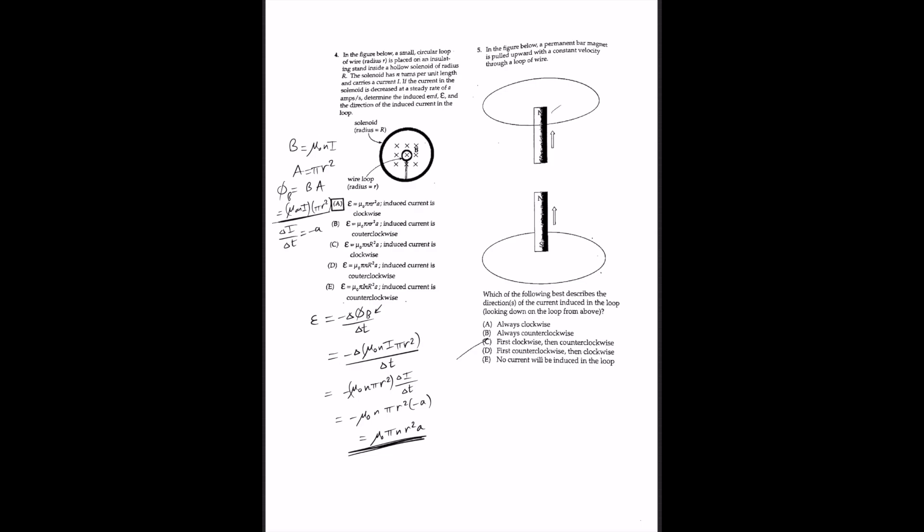For question 5, a permanent bar magnet is pulled upward with constant velocity through a loop of wire. Magnetic field lines emerge from the north pole, so as the north pole moves upward through the loop, the upward flux increases, and the induced current is clockwise to oppose it. As the south pole then moves away from the center, the upward flux decreases, so the induced current becomes counterclockwise. Looking down from above, the answer is C: first clockwise, then counterclockwise.